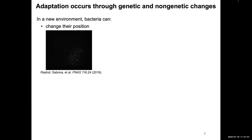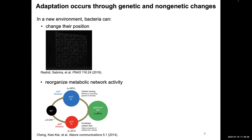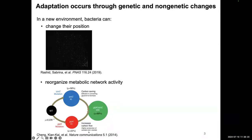In addition to chemotaxis, cells can also adapt to their environment through different mechanisms. For example, they can reorganize their metabolic network activity. If cells have a specific mutation and are put in a specific environment, they can change their metabolic activity to increase uptake of specific nutrients like glycerol, or increase production of specific organic acids like acetate and lactate.